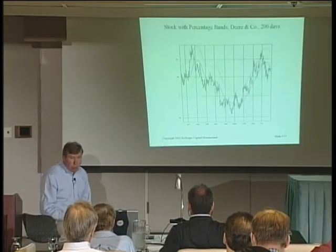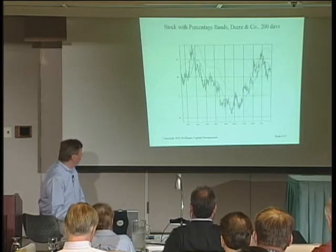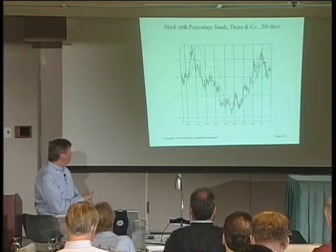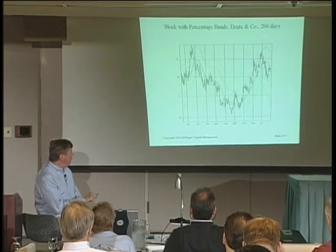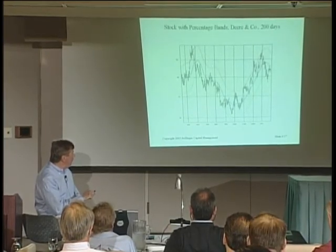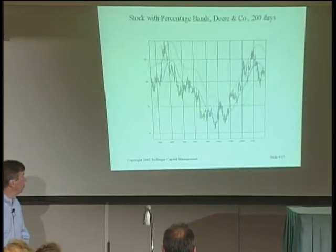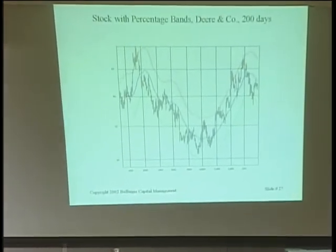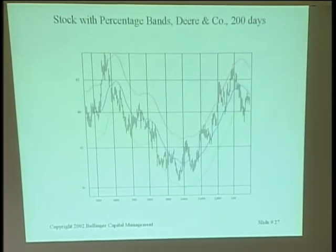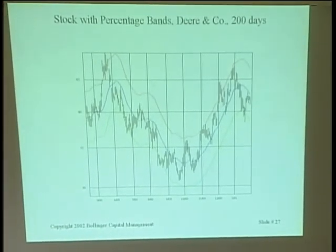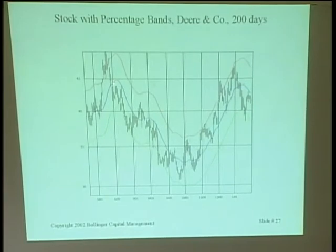One of the first developments that came from Hurst was this idea: draw a moving average, then project that moving average above and below itself by some percentage. In this case we're using 10% bands — a 20-day moving average with bands projected 10% above and 10% below that moving average.